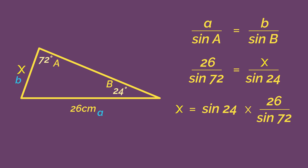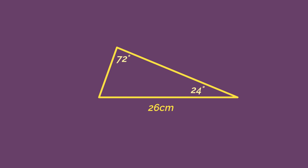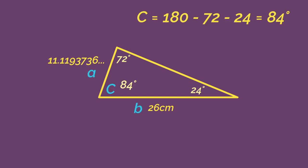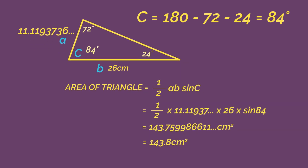Enter that into your calculator and x equals 11.11937 and so on. So now we can find the area. Label your A, B and C's again. Angle C is 84 degrees. So substitute our numbers into the equation and we get the area as 143.8 centimeters squared.